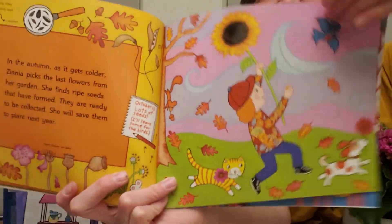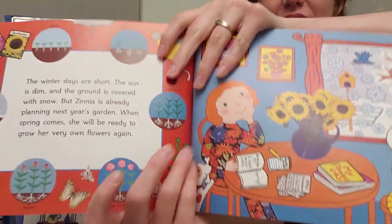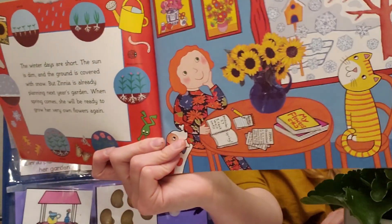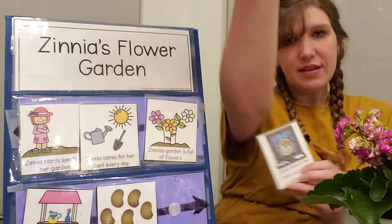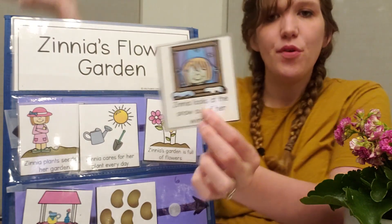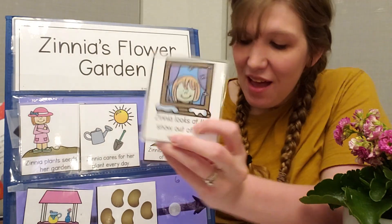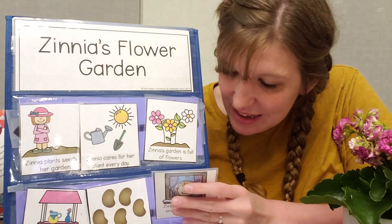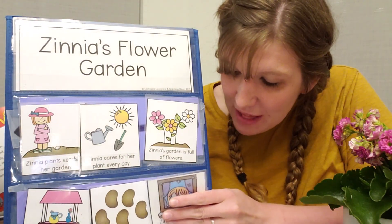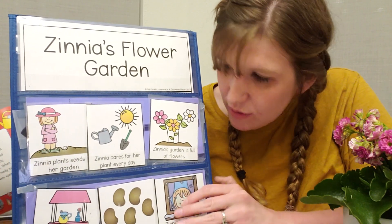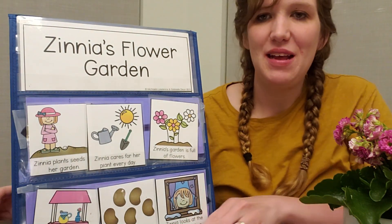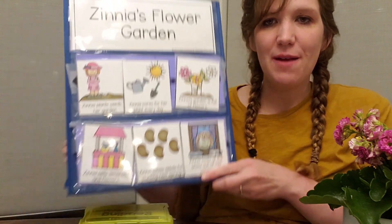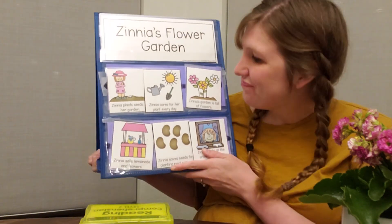And then last, we see the last season in our book is winter. Zinnia looks out at the snow during the winter. Amazing. So let's see if we can use this sequence of events to summarize what happens in our story, Zinnia's Flower Garden.